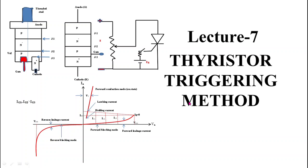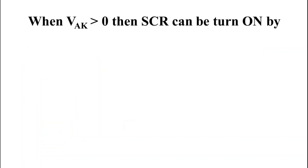The first method is forward voltage triggering. This technique is already been discussed in my previous lecture. In this technique, anode to cathode voltage is made greater than zero. When this anode to cathode voltage is increased beyond forward break over voltage VBO, then SCR get turn on. But this method is avoided as it may damage the SCR.